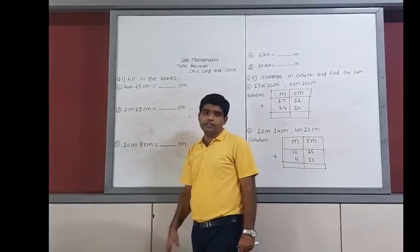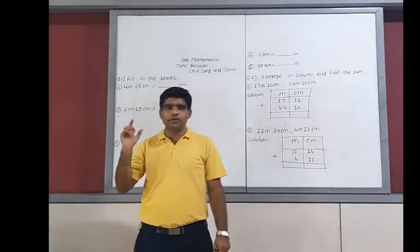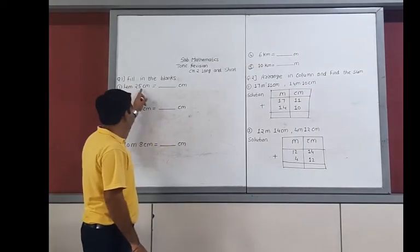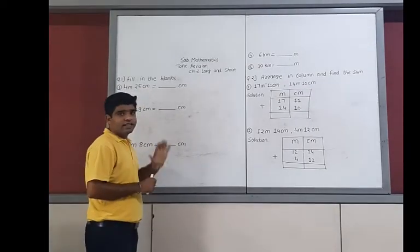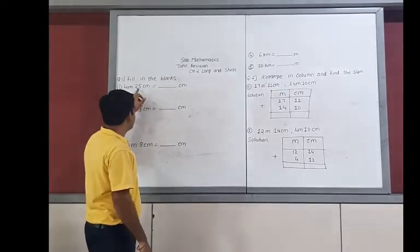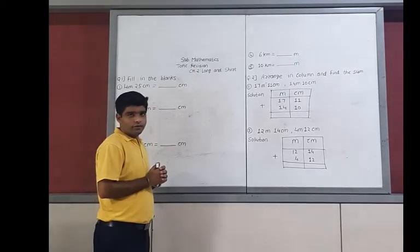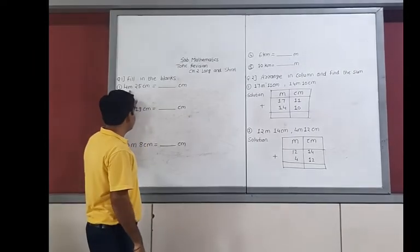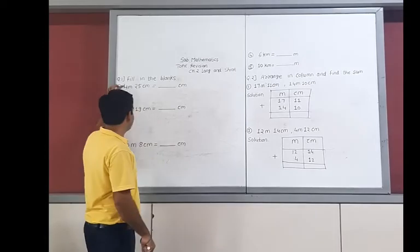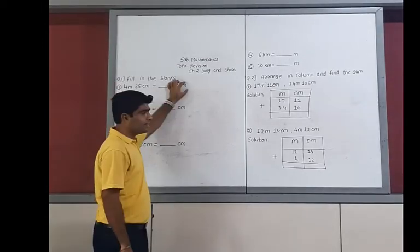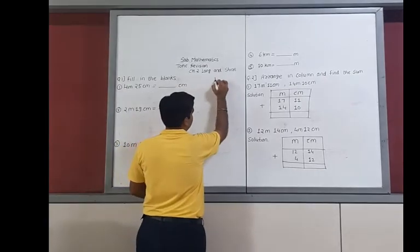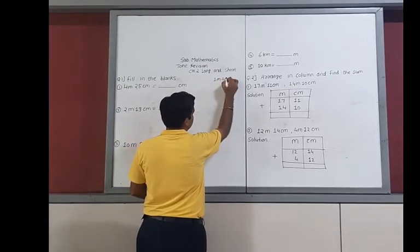Now the first question: this involves lengths. Here, 4 meters 25 centimeters are to be converted into centimeters. The 25 centimeters is already in centimeters. Now we need to convert the meters part. I already discussed: 1 meter equals 100 centimeters.